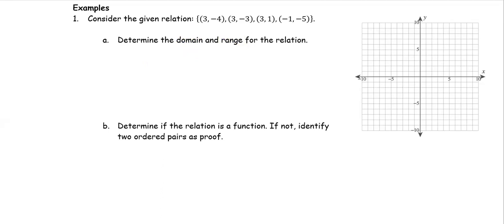In this example, we consider the given relation as a set of ordered pairs: (3, -4), (3, -3), (3, 1), and (-1, -5).